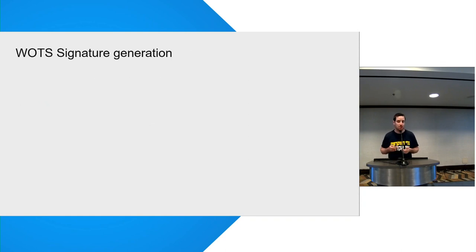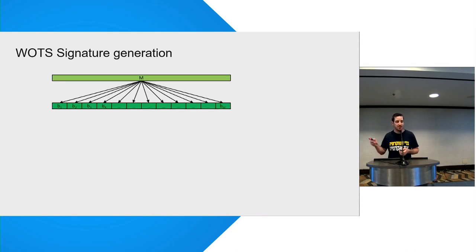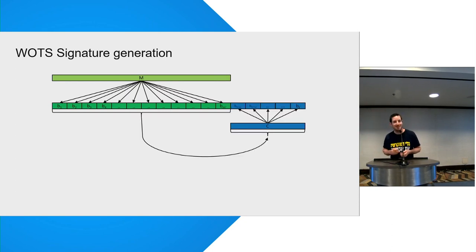And now we're going to take several of these chains and sign the message. And how do we do it? In the signature generation, we're going to take the message. And we're going to split it into log W bits chunk. Then we're going to take all of those values and code it into numbers. And we're going to calculate the sum of them, which is called the checksum. And then we're going to take also this checksum.